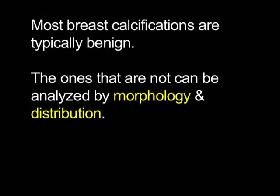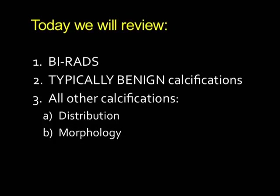To begin with, there are two statements. Most breast calcifications are typically benign — benign in a very recognizable way — and it's key to be able to recognize those calcifications and realize that you don't have to do anything else for them. Those calcifications that are not typically benign, you then analyze two pieces of information: their morphology and their distribution. The words you pick to describe those things will guide you to your assessment category.